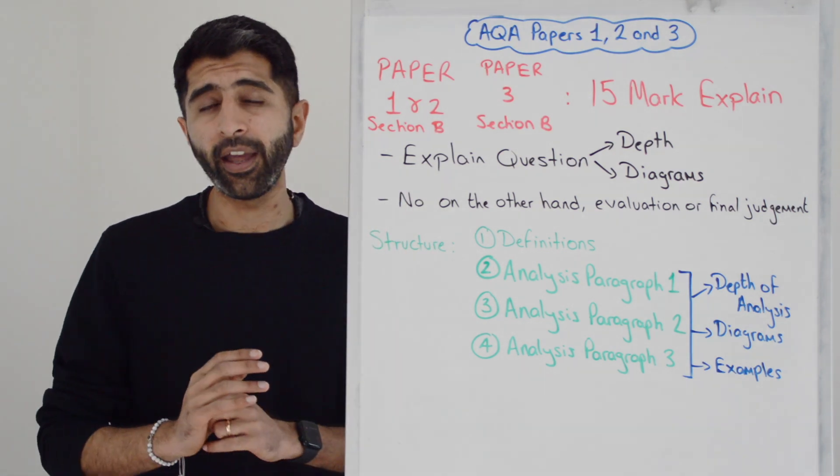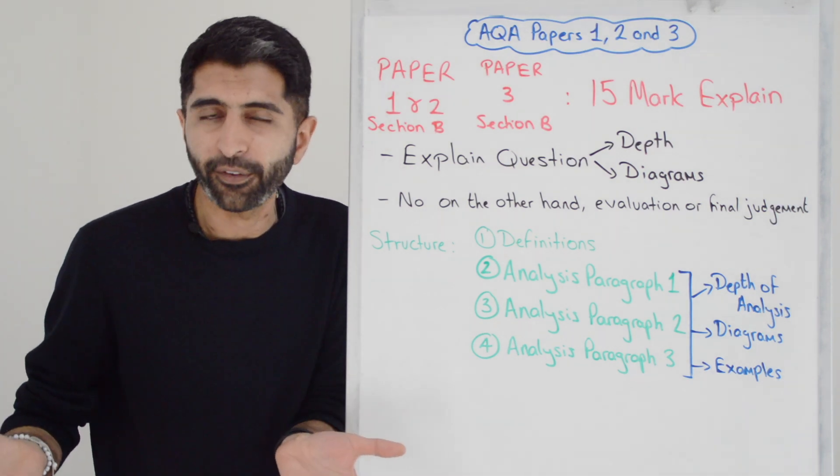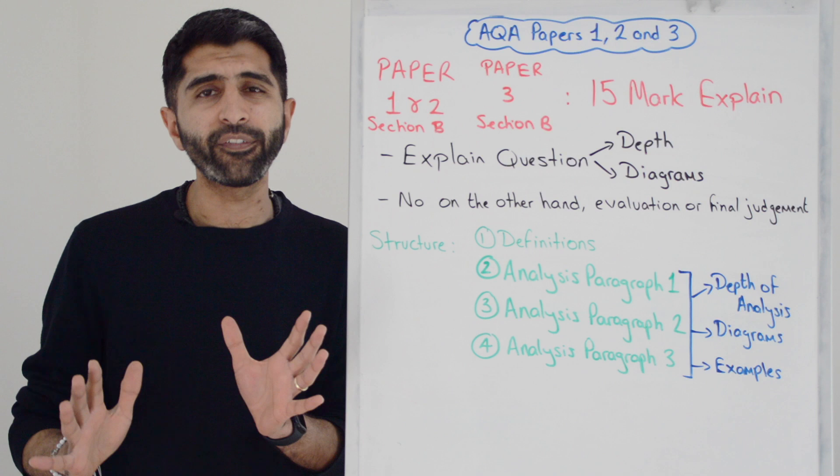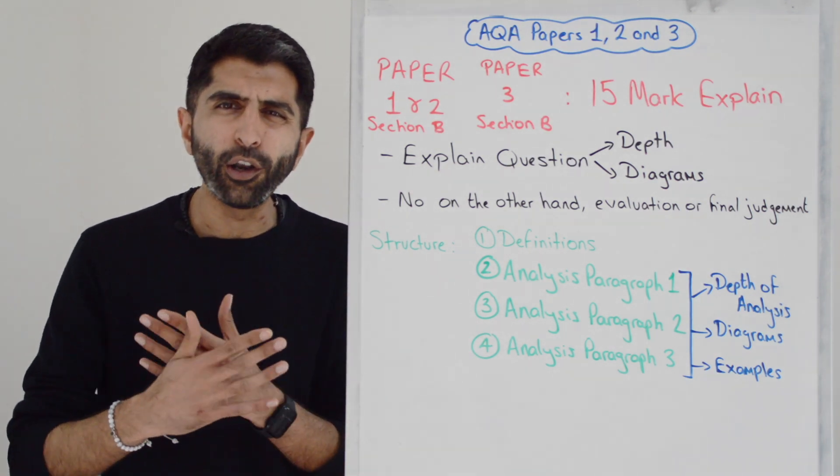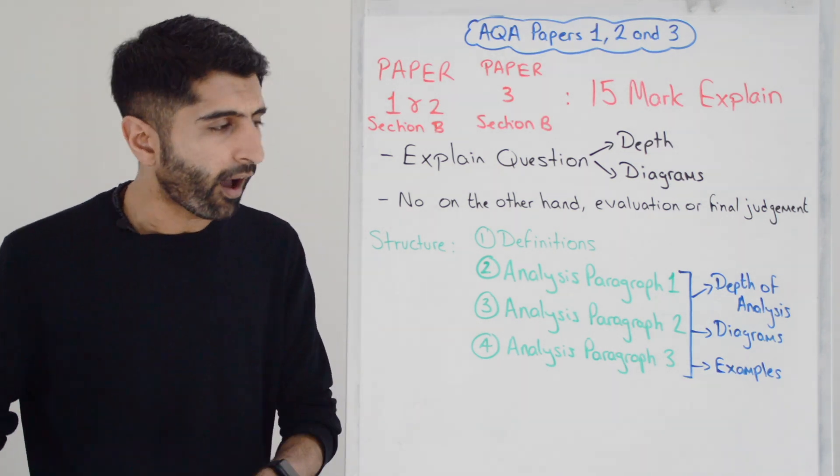There are some 15-markers out there where there are only two ways you can answer the question. There are only two analysis paragraphs you can write. So, writing two in high detail will be fine in that situation, but two generally is fine as long as you can write in detail. But within 20 minutes, if you think you've got loads of time to write a third, then absolutely write a third. It's two or three in high detail.